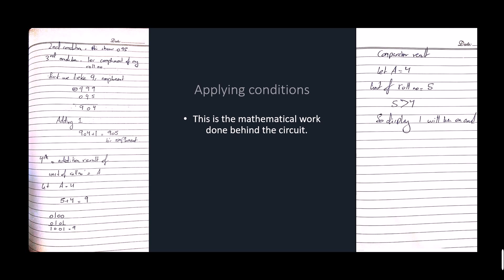I will now apply the conditions. This is the mathematical work done behind the circuit. The mathematical conditions are that at number 3 we have to apply the tenth complement of the roll number. For that we need to take the ninth complement first and then we add 1 which will make it the tenth complement.